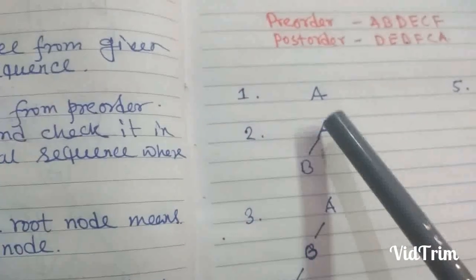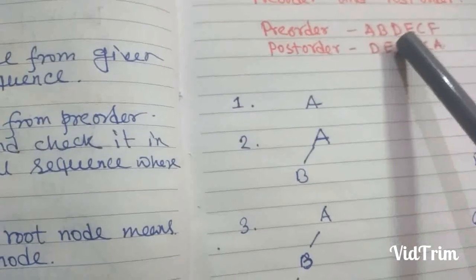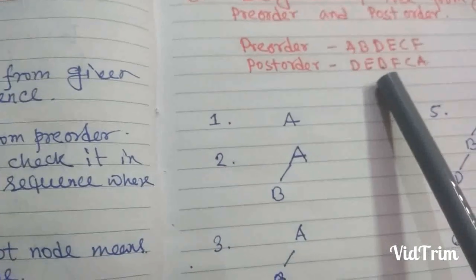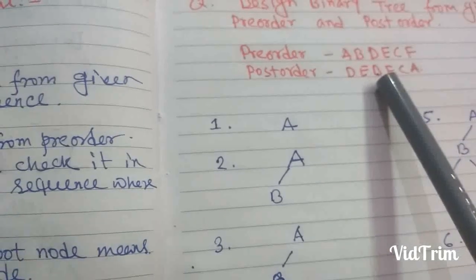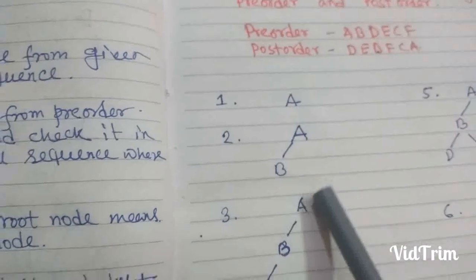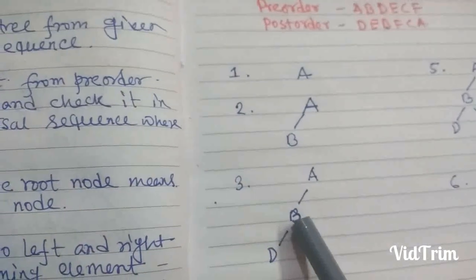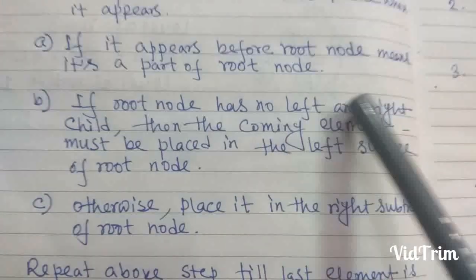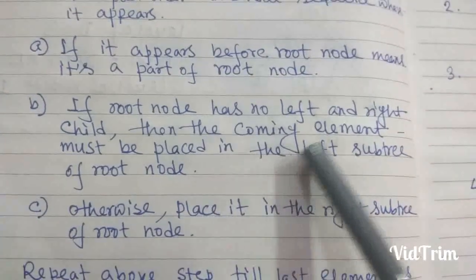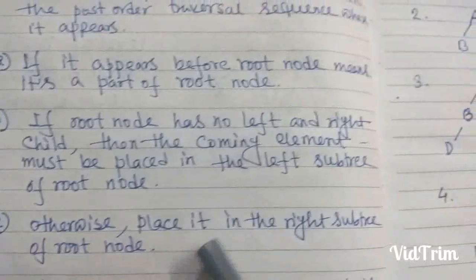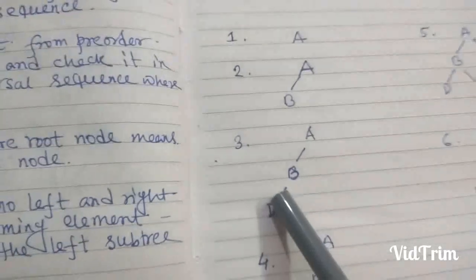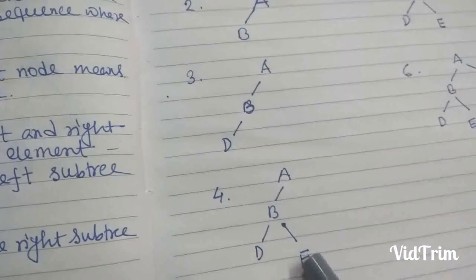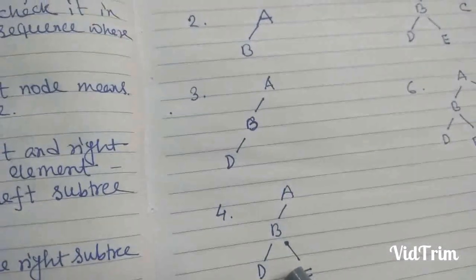Again take the next element, which is E. E is a part of B, but B already has a left subtree. So, according to the rule, if the root node has a left subtree, place the coming element in the right subtree. Therefore, we place E in the right subtree of B. That completes step 4.